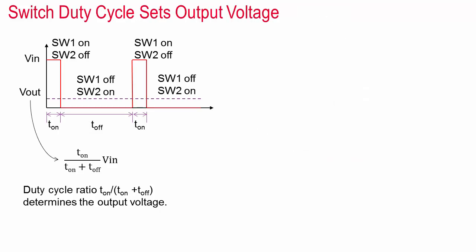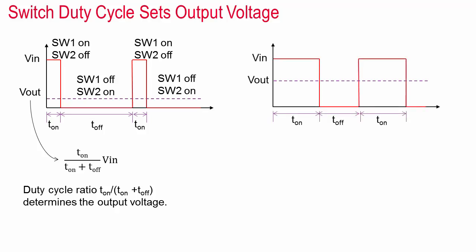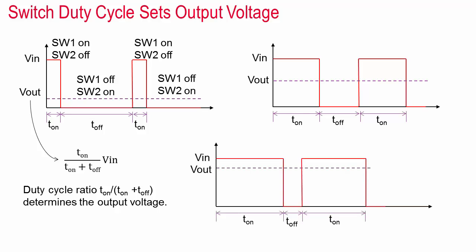If the clock is operated such that the converter switches back to state one before the current in the inductor decreases all the way to zero, this is known as continuous mode, then it can be shown that in steady state the output voltage is proportional to the duty cycle, the fraction of the clock period that switch one is closed.